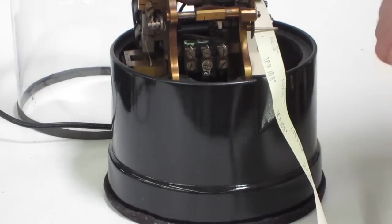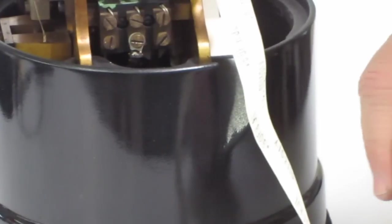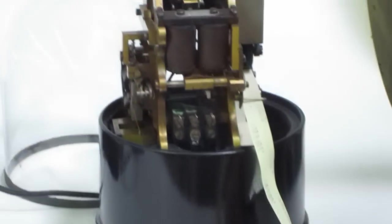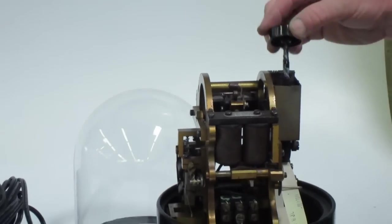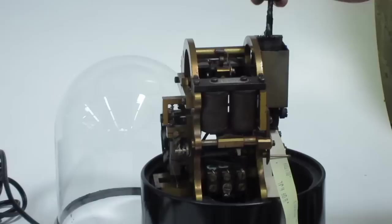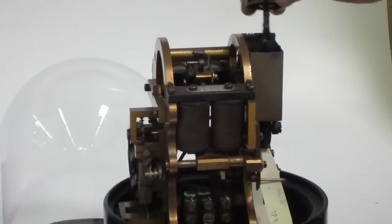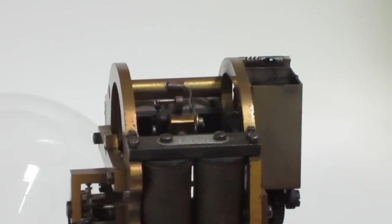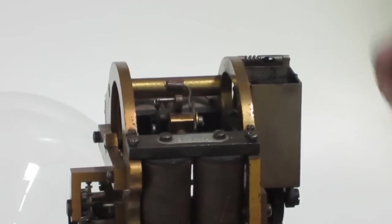One of the first things that you have to do with the ticker tape is you have to ink this little felt drum up here. So you take the ink and you brush that onto the felt drum. Make sure that you get a fairly even coating on it.